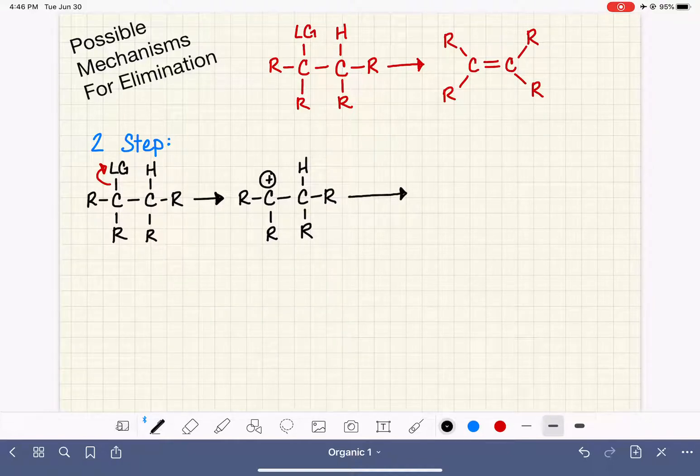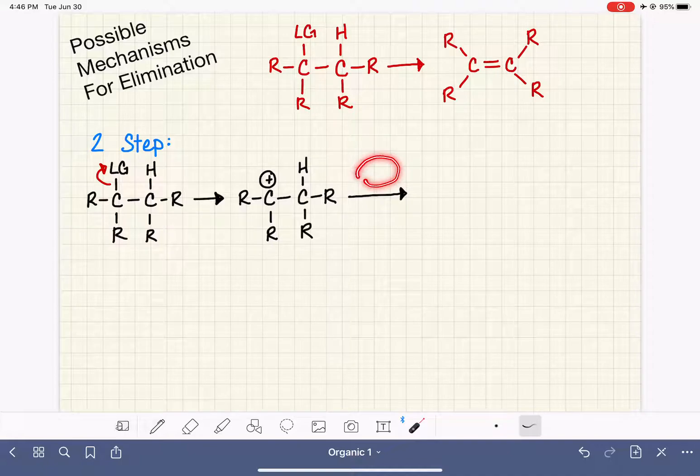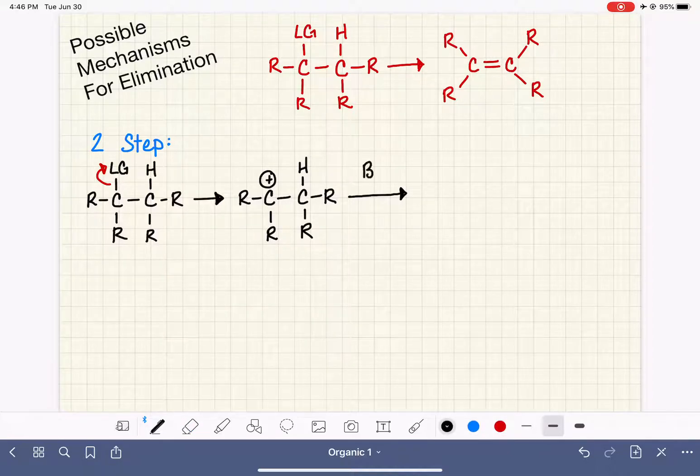And then we need a step two in this reaction. If we're paralleling this to the SN1 reaction, in the SN1 reaction, the first thing that happens is the leaving group falls off and we form a carbocation, and the second thing that happens is a nucleophile comes along and adds itself to the carbocation. In the elimination reaction, instead of using a nucleophile, we're going to use a base,